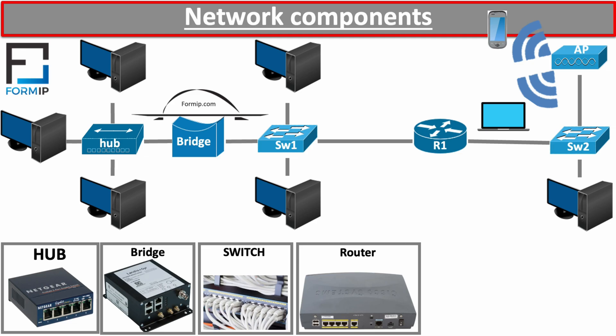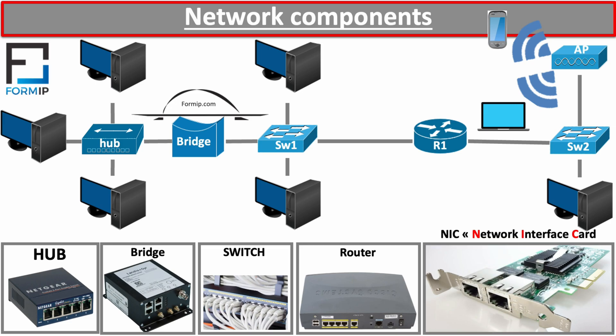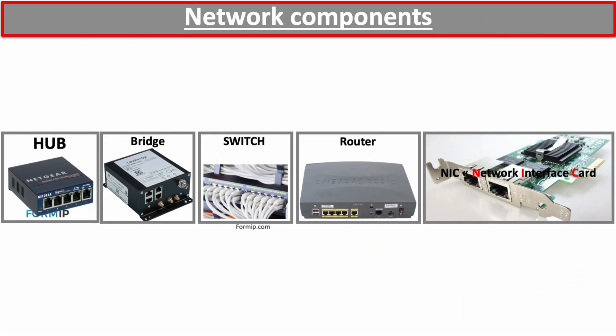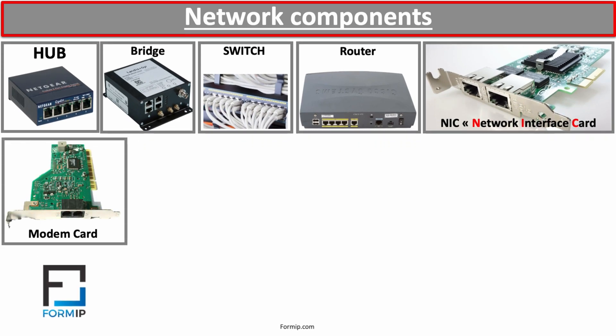Now let's look at the network adapter. A network interface adapter is used to connect a computer to the network — it is a printed circuit board installed on your computer, and its role is to convert the incoming data so that the computer can understand it. Each network adapter has its own unique identifier, which is the MAC address. There is also the modem adapter, which allows a computer to transmit data over telephone lines. Since data on a telephone line is analog while a computer's data is digital, the modem converts the telephone line data to digital so the computer can understand it.